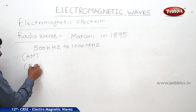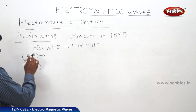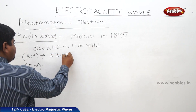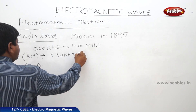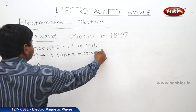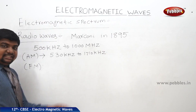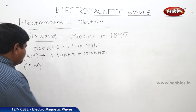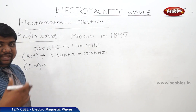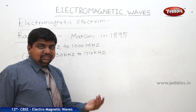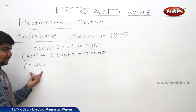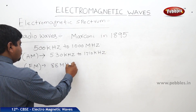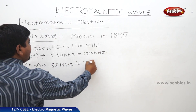Amplitude modulation covers frequencies from 530 kilohertz to 1710 kilohertz. Frequency modulation — FM — is what we listen to daily on FM radios. The frequency modulation range is 88 megahertz to 108 megahertz.